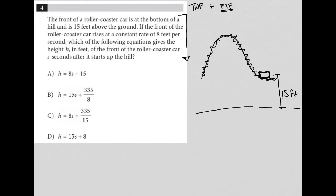The next sentence says if the front of the roller coaster car rises at a constant rate of eight feet per second. So let's say it's going this way at eight feet per second. Which of the following equations gives the height h in feet of the roller coaster car s seconds after it starts uphill?